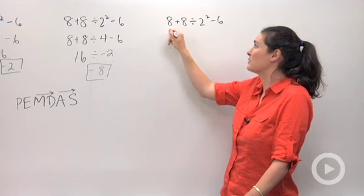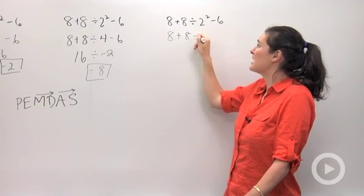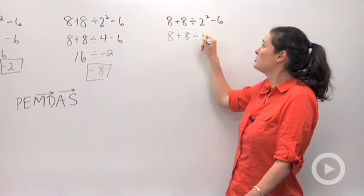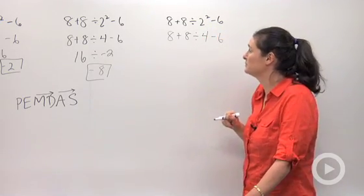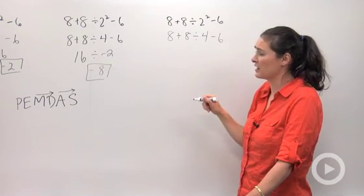Next thing we need to do is exponents. Because PE. E stands for exponents. 8 plus 8 divided by 2 squared, or times itself, is equal to 4. Then take away 6. So we've done parentheses. We've done exponents.